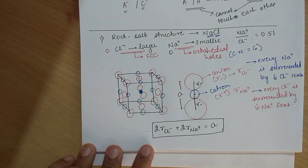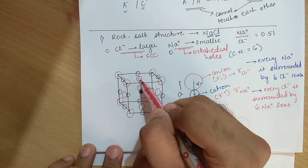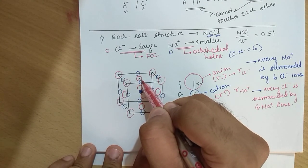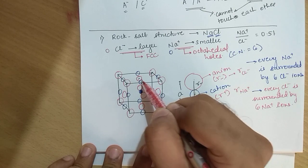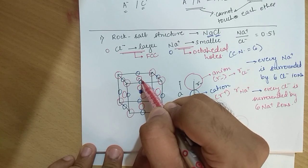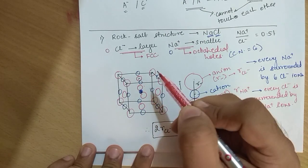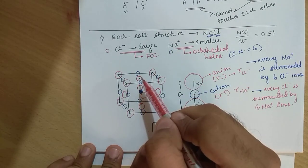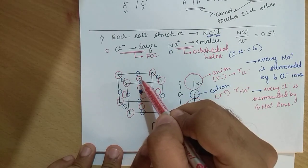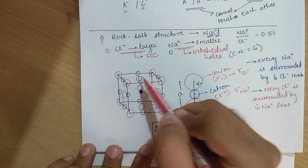If you want to check this, you can consider any ion — for example, the ion at the face center. If you look at this Cl⁻ ion, it is simultaneously surrounded by Na⁺ ions: 1, 2, 3, 4, one below it (5), and one above it in the adjacent cube (6). So every Cl⁻ ion is surrounded by six Na⁺ ions.